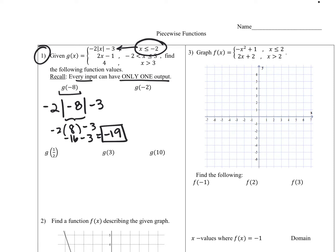Next we have g of negative two. The x-value of negative two again fits into the first piece because we have that equal-to sign. So we take negative two times the absolute value of negative two, minus three. The absolute value gives us two, so negative two times two minus three is negative four minus three, which is negative seven.